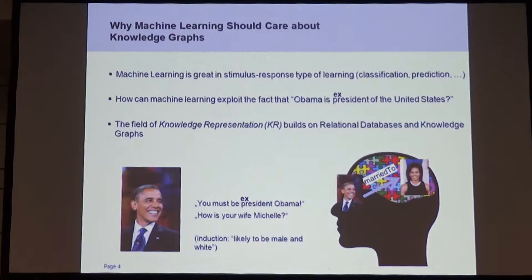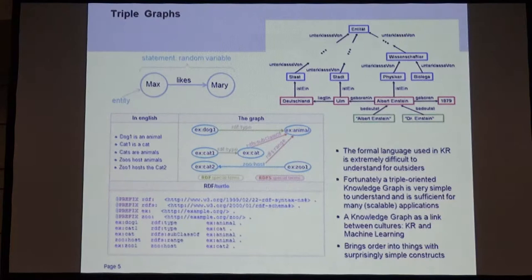Here's an example. You have a smart agent and he recognizes this must be ex-president Obama. Then due to his knowledge graph, he knows that Obama is married to Michelle Obama. From this we can do induction and conclude further facts. That's the challenge: how to do machine learning in these knowledge graphs.